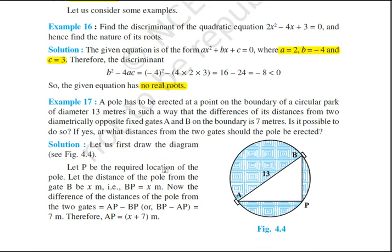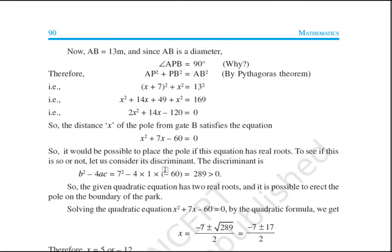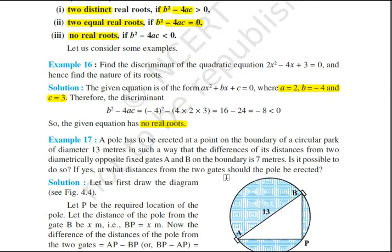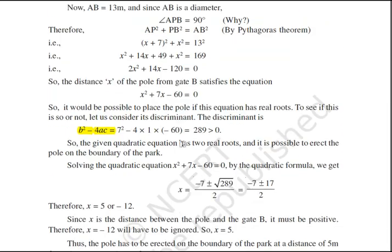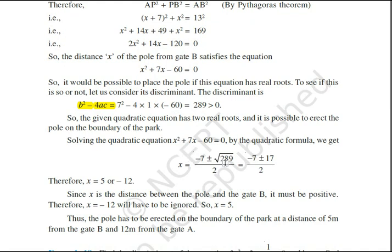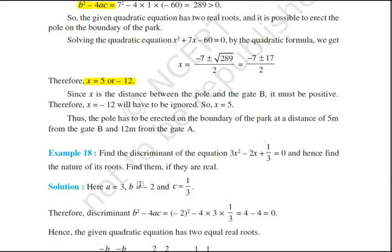In this problem, first you have to frame the equation, then after solving you have to find the discriminant. It is coming to 89, which is greater than 0. We know that if it is greater than 0, then there are two distinct real roots. After putting the values and solving, we are getting two roots: 5 and -12.